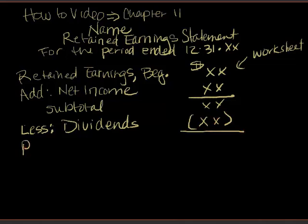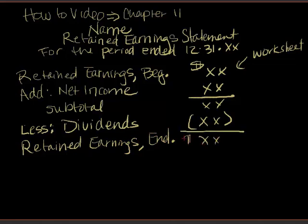And what that will give us is our retained earnings balance at the end of the period, so December 31st if we're dealing with a calendar year. We'll come up with our final amount, and we'll do our double underlines to indicate that we are done.